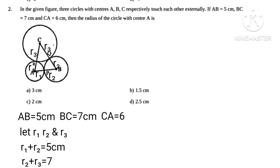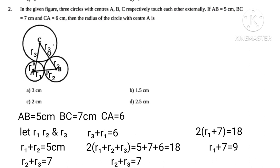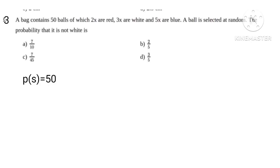As seen from figure, r1 plus r2 equals 5, r2 plus r3 equals 7, r3 plus r1 equals 6. Adding all 3 we get 2 times r1 plus r2 plus r3 equals 5 plus 7 plus 6 equals 18. Hence putting r2 plus r3 equals 7, we get 2 r1 plus 7 equals 18, therefore r1 equals 2 centimeters.